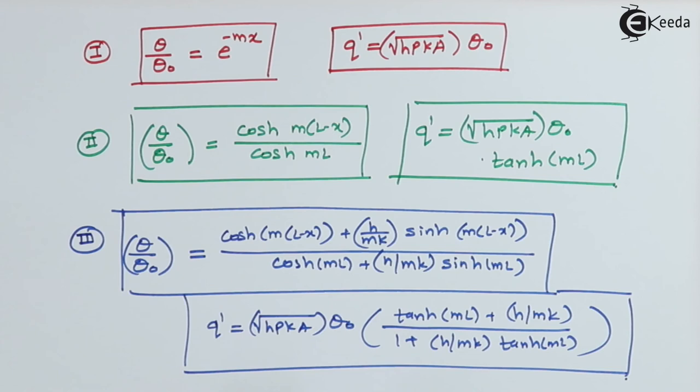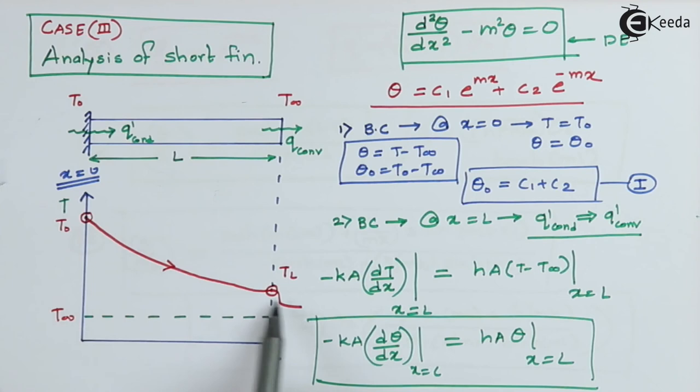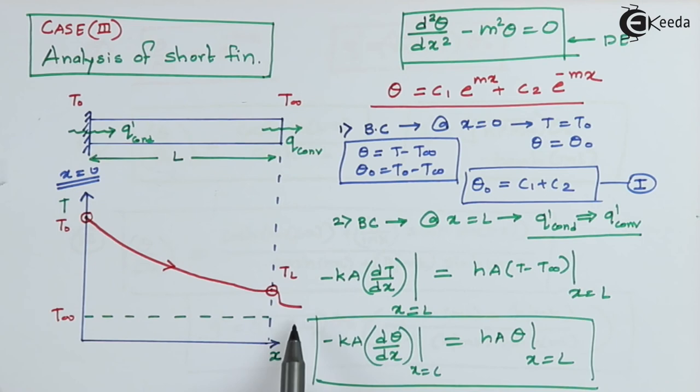With the temperature distribution from the third case, we can draw this temperature profile. At the end, we can say that heat transfer by conduction equals heat transfer by convection, so there is a small drop in temperature at the tip due to convection. Thank you for watching this video — stay tuned with Ekida and subscribe.